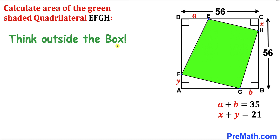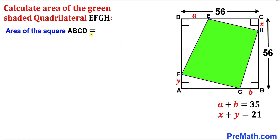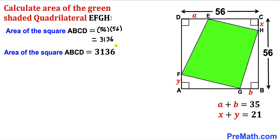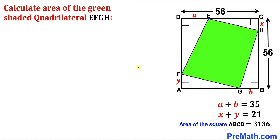So we are going to think outside the box. Let's get started. Our very first step is to calculate the area of square ABCD whose side lengths are 56 each. The area of this square is simply 56 times 56, which gives us 3136. So the area of square ABCD turns out to be 3136 square units.